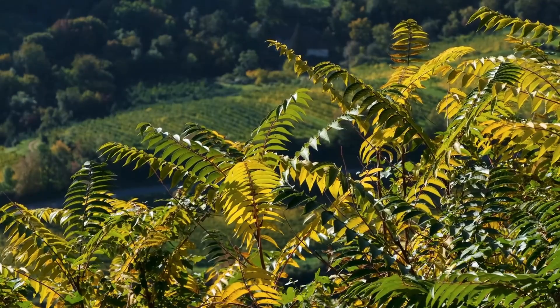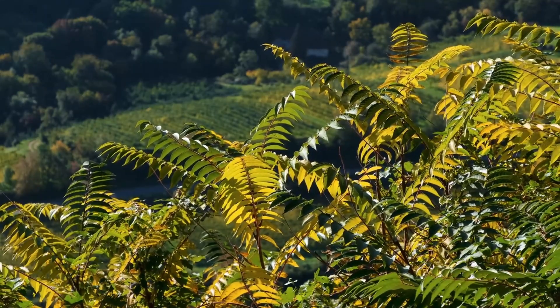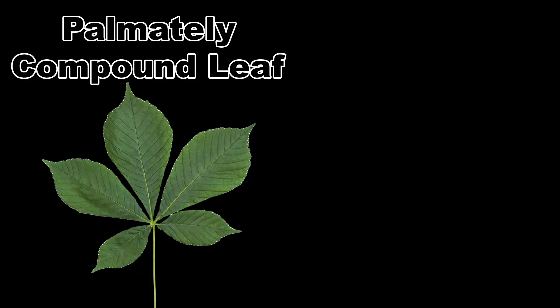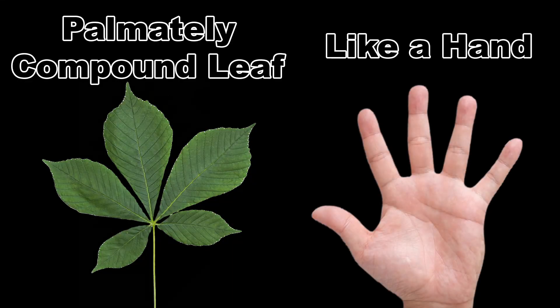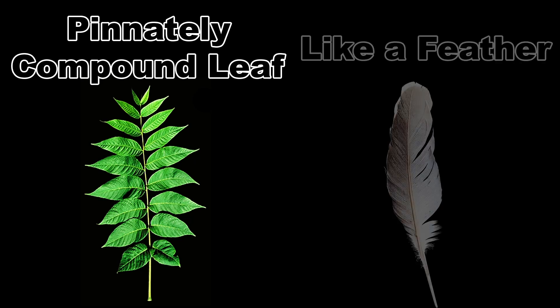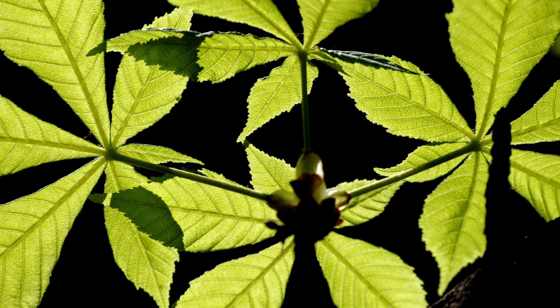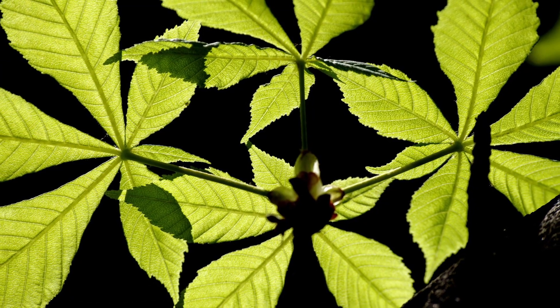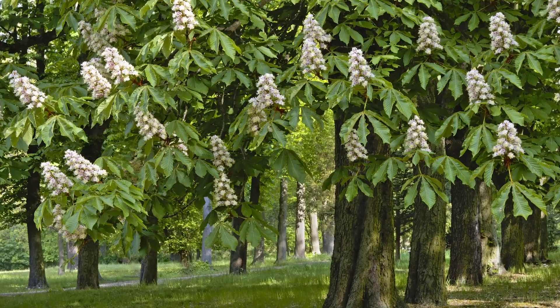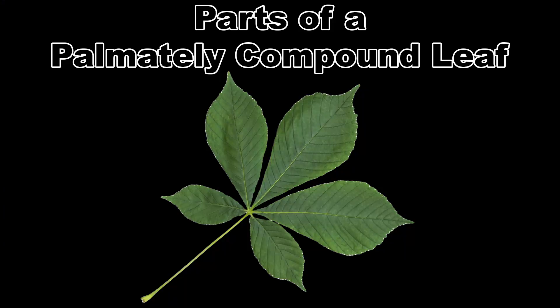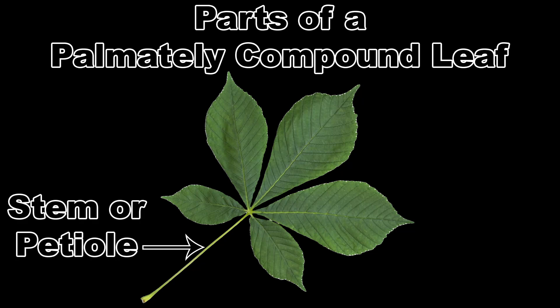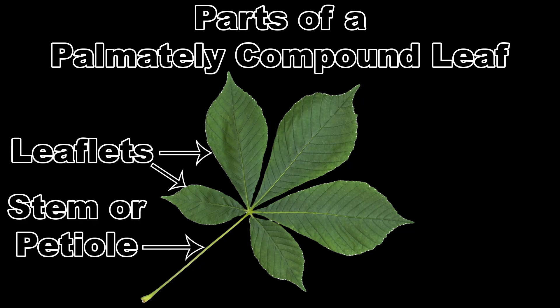Now we get to the compound leaves, which are more complex and come in a couple of different varieties: palmately compound leaves, which more or less look like a hand, and pinnately compound leaves, which look more like a feather. Let's start with the palmately compound leaves as they are the less complex of the two. We'll use a horse chestnut leaf. Palmately compound leaves also have a stem or petiole, but instead of a single blade, it has two or more leaflets that all originate from the same location.